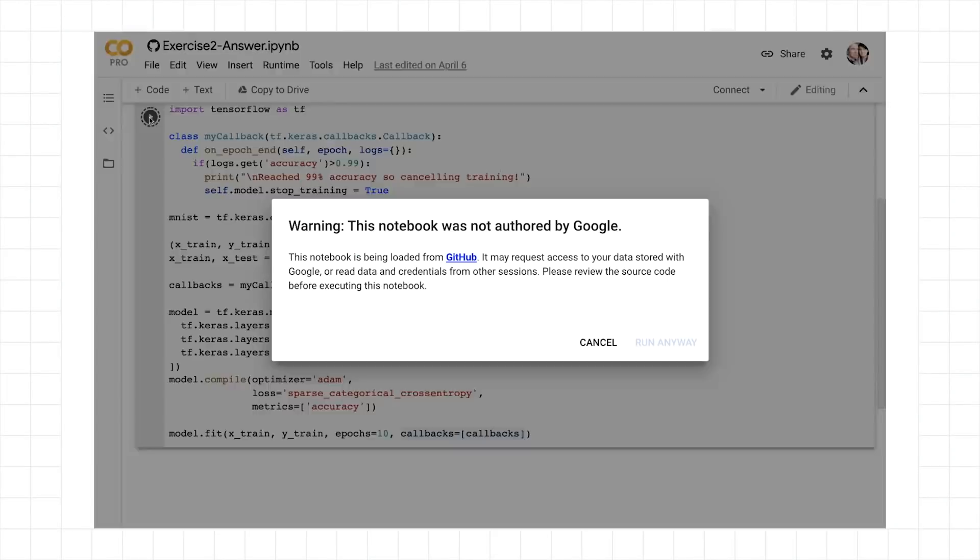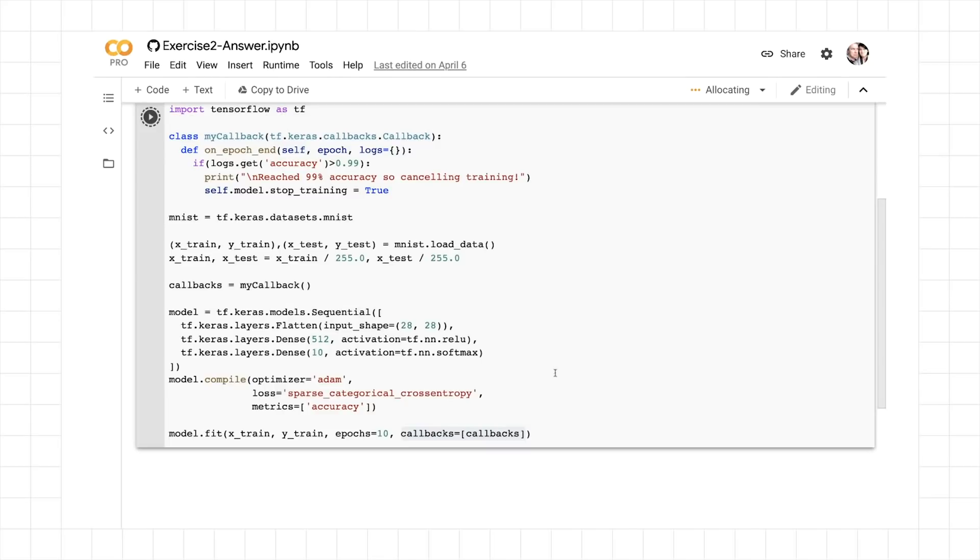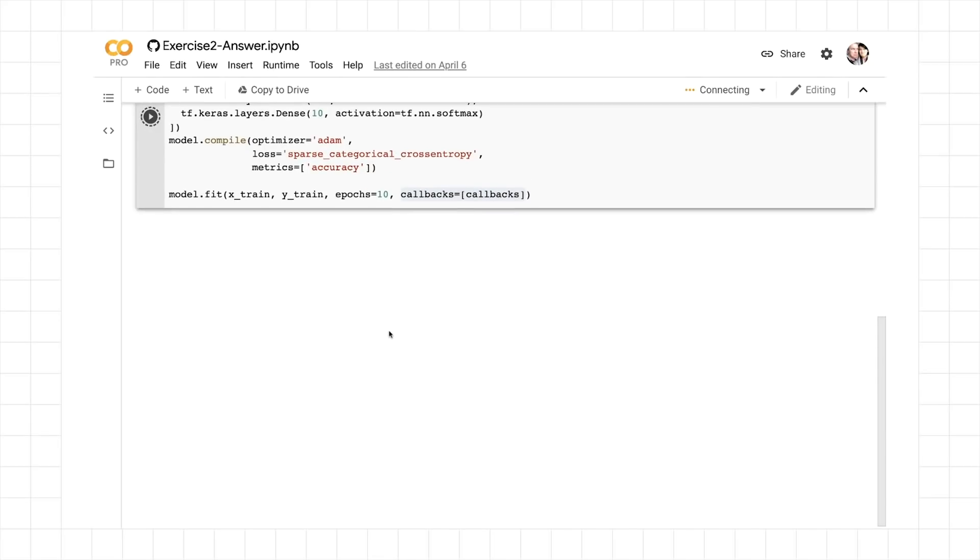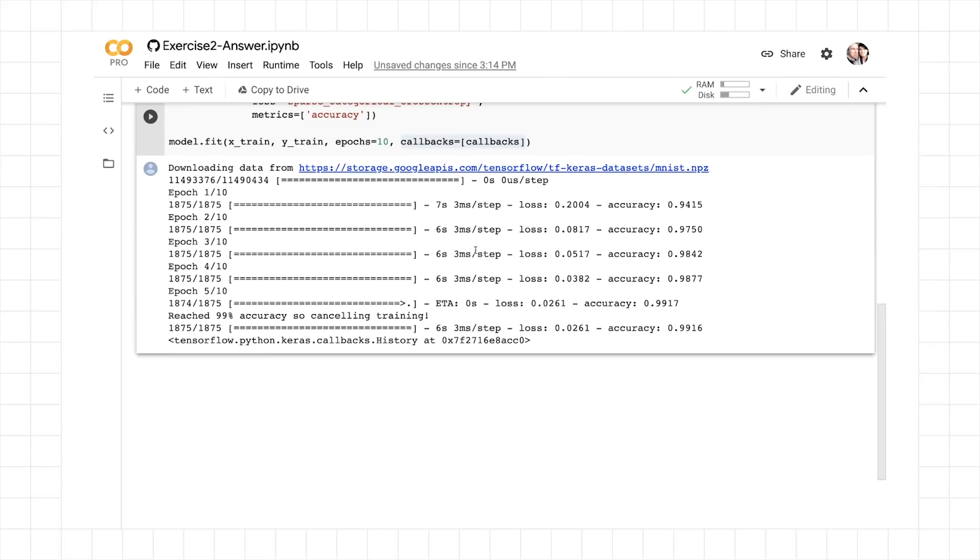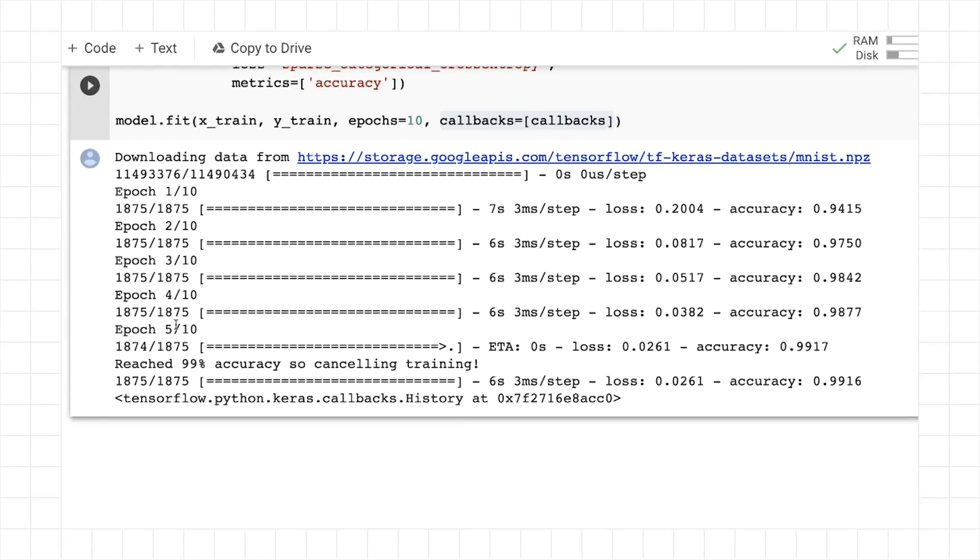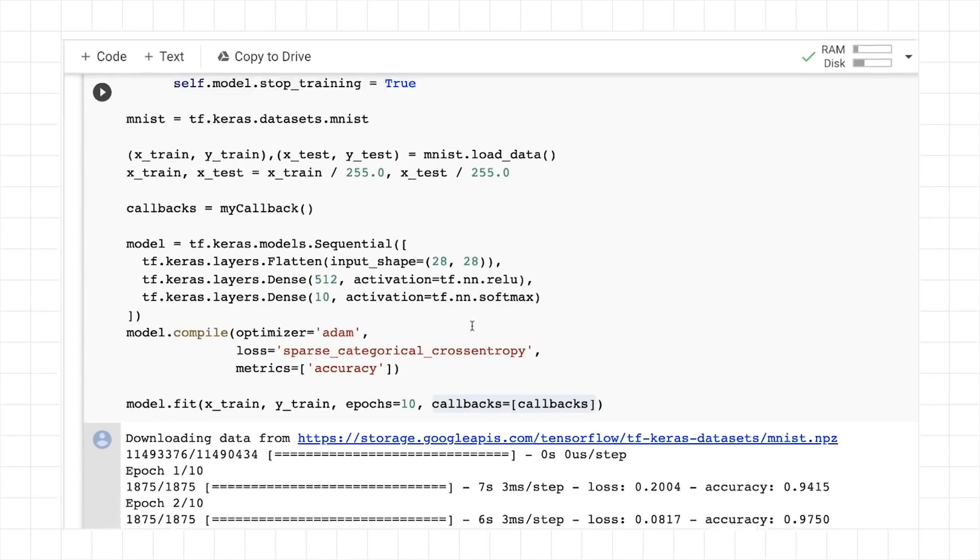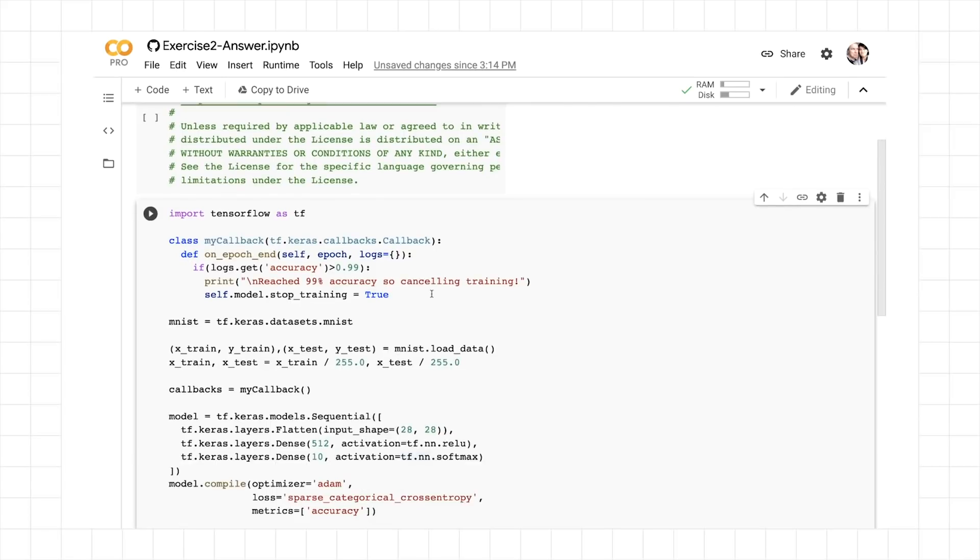So if I were to run this, I'll get this warning. But let's see it running. And here you see after five epochs, the accuracy was 0.9917, which is greater than 99%. So it canceled training after only five of the 10 epochs. And it was able to hit that 99% accuracy. So that's the answer to exercise two. Hope you were able to get it.